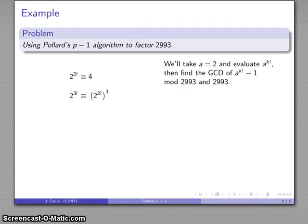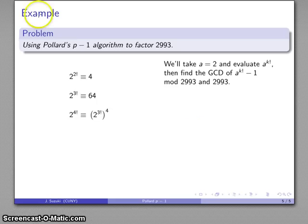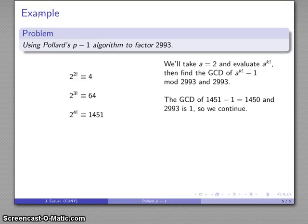Again, every factorial is the preceding factorial raised to a specific power. We find the greatest common divisor of the number minus 1 and the number of interest. Again, 1, so we move on to the next. To the fourth. Greatest common divisor: again, 1. Move on to the next.